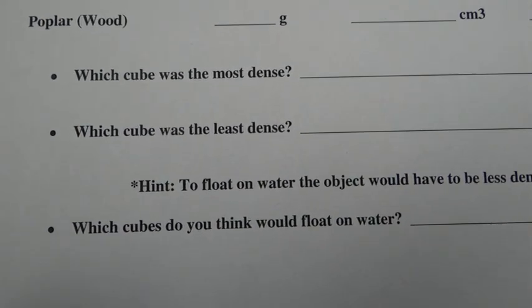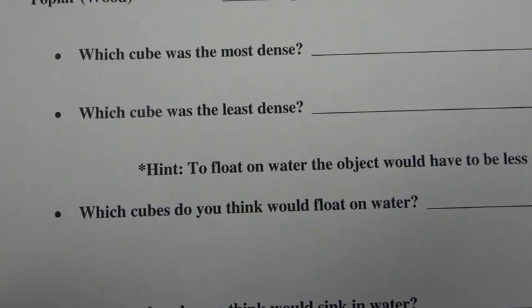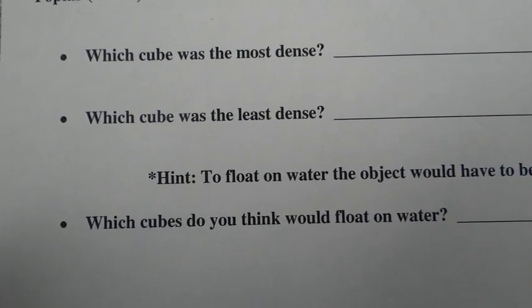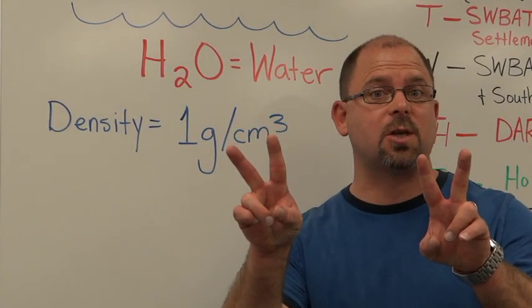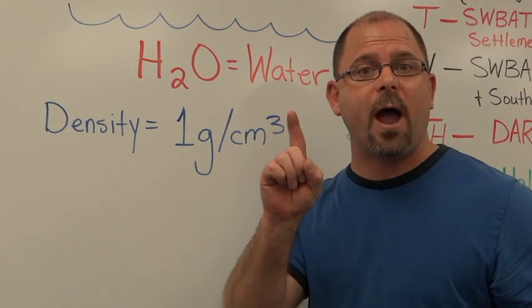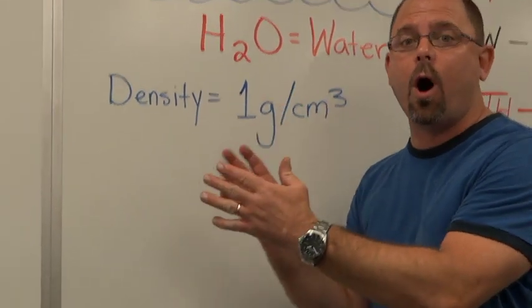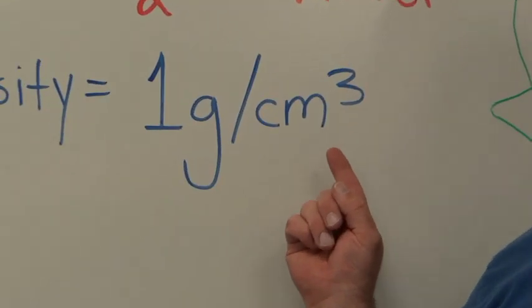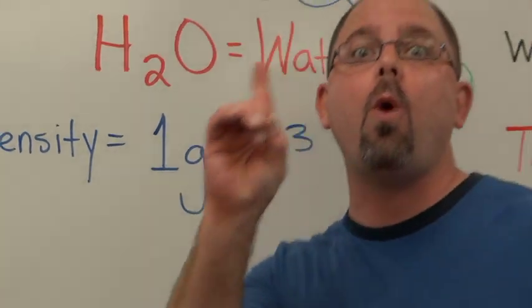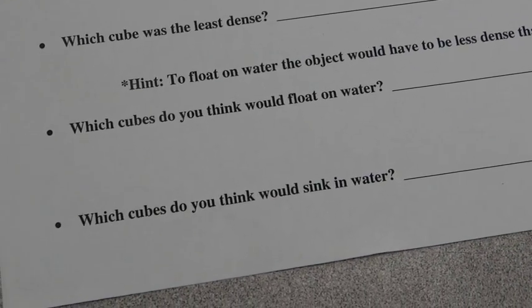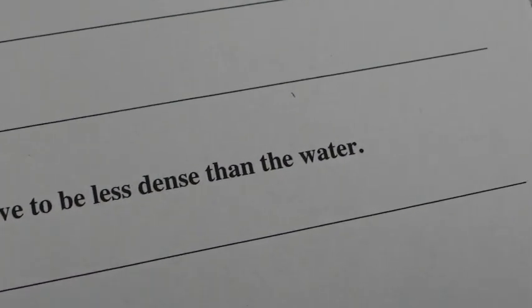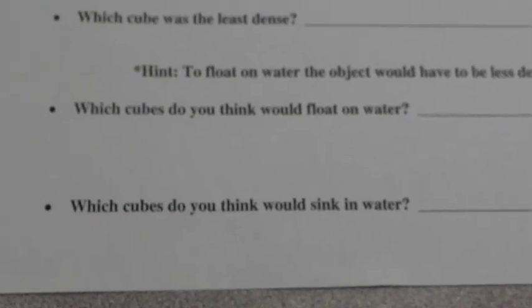Next, there will be a few questions to answer. With all your densities on your sheet, you have to figure out which cube was the most dense and which was the least dense, and write down the names. For the next two questions, you'll need to know that the density of water (H₂O) is 1 gram per cubic centimeter. To float on water, an object must be less dense than water — less than 1. To sink, it would be more dense than 1.